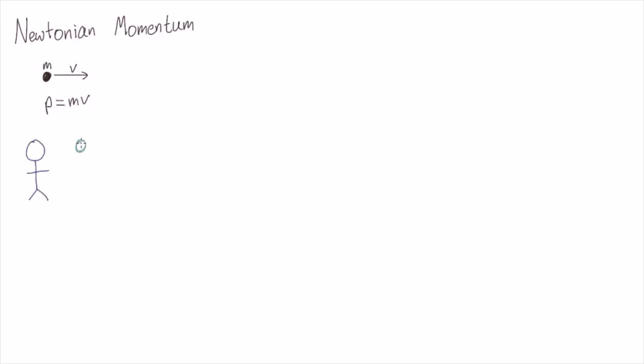So here we have Bob looking at two balls, a green and a pink one, flying towards each other with exactly the same velocity.